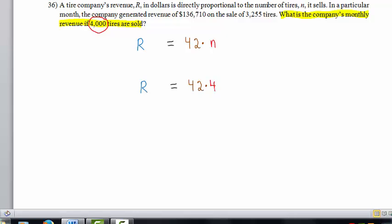We replace N with 4,000. And R equals 42 times 4,000, which is $168,000.